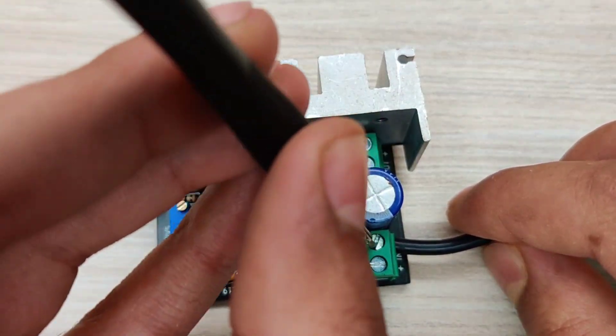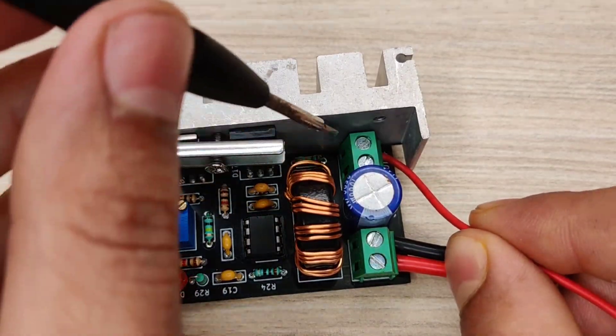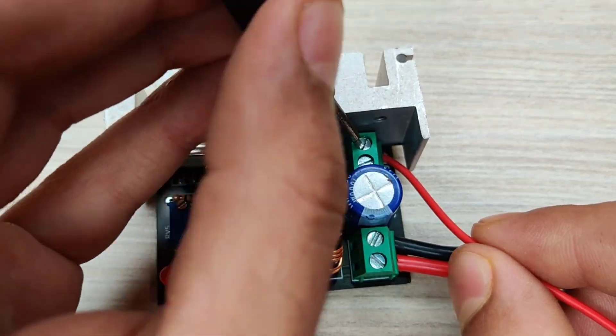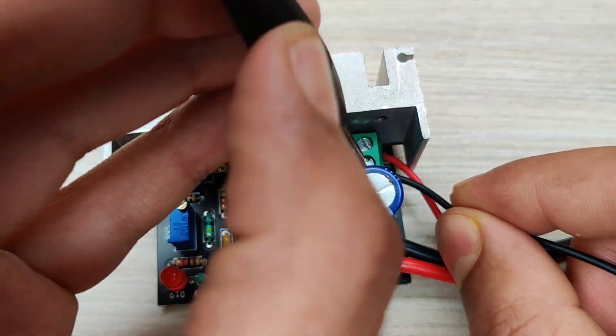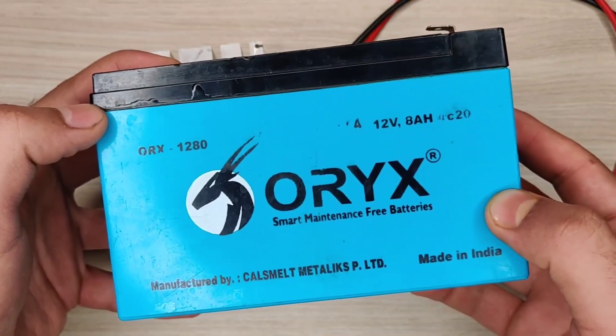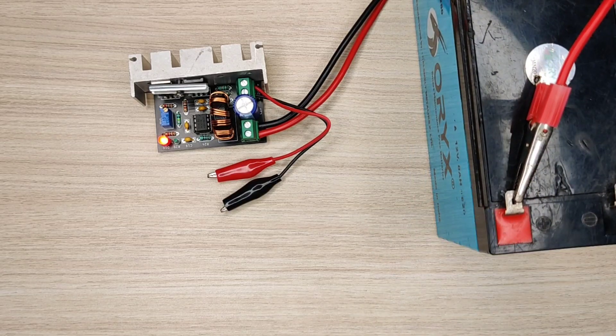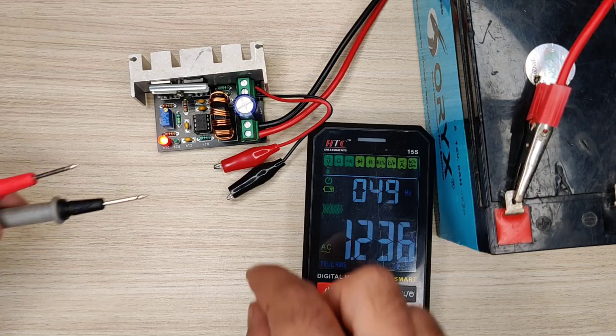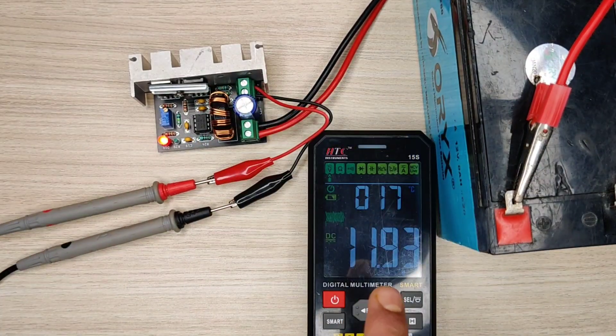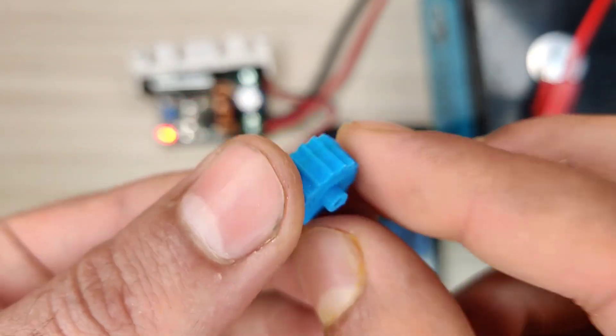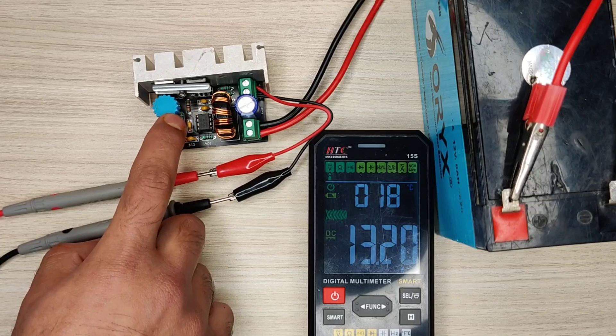Secure the wires into the input and output connectors. I will use this 12V battery as input supply. Also I will connect the multimeter to track the output voltage. Now move this potentiometer clockwise to increase the output voltage.